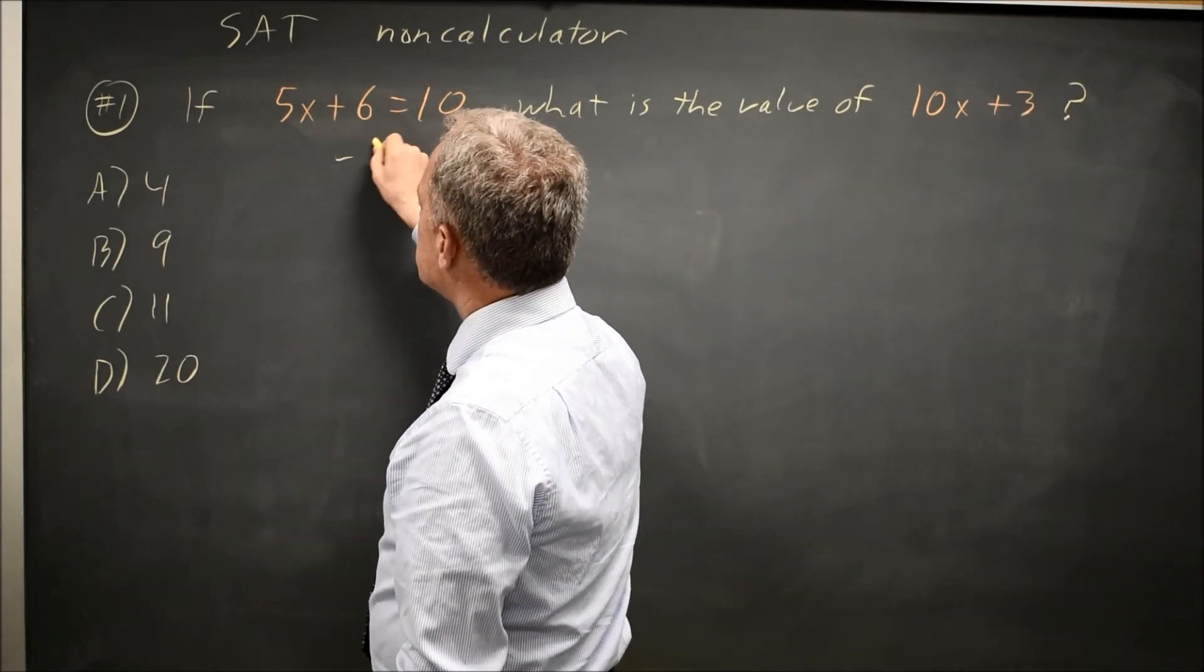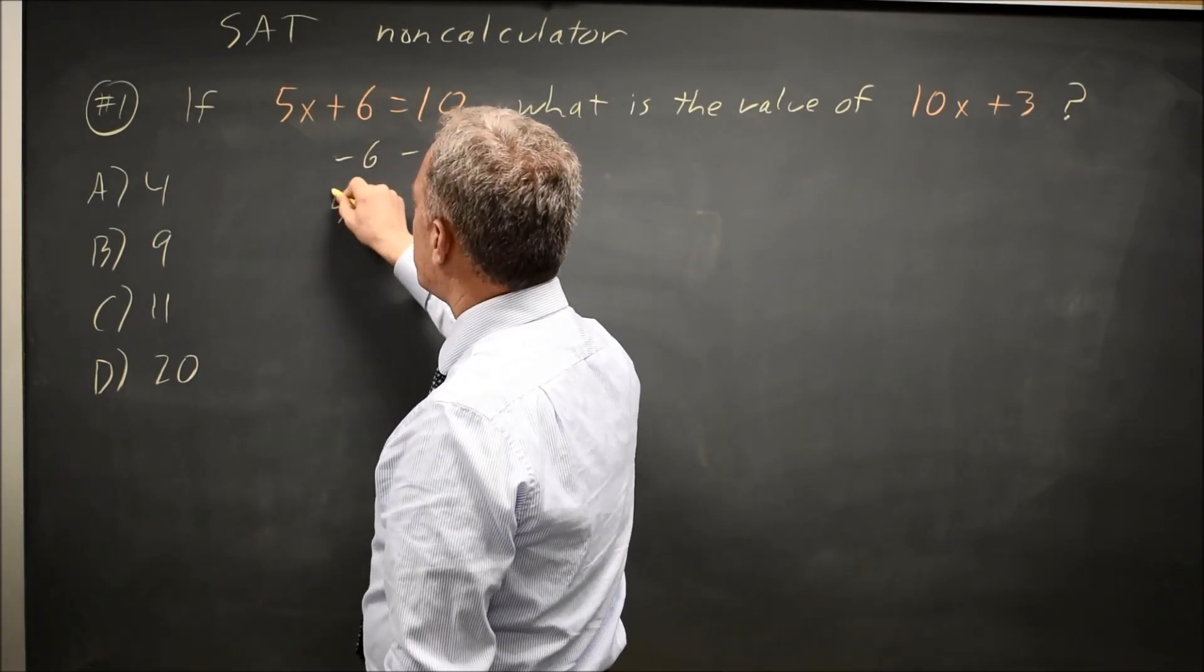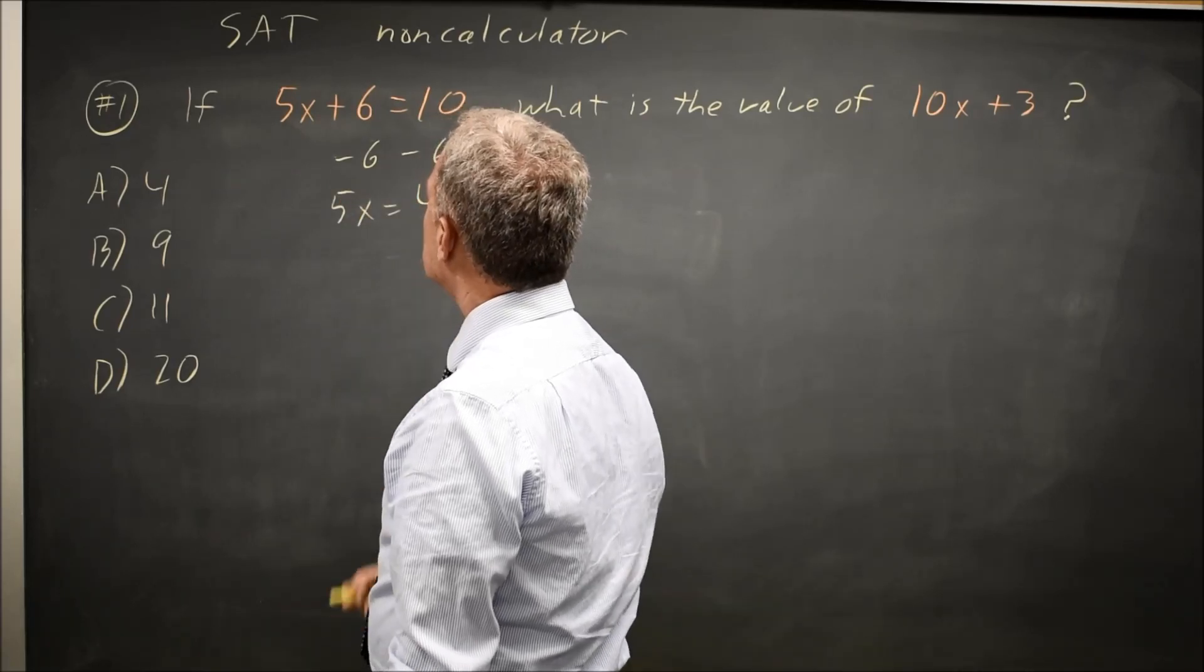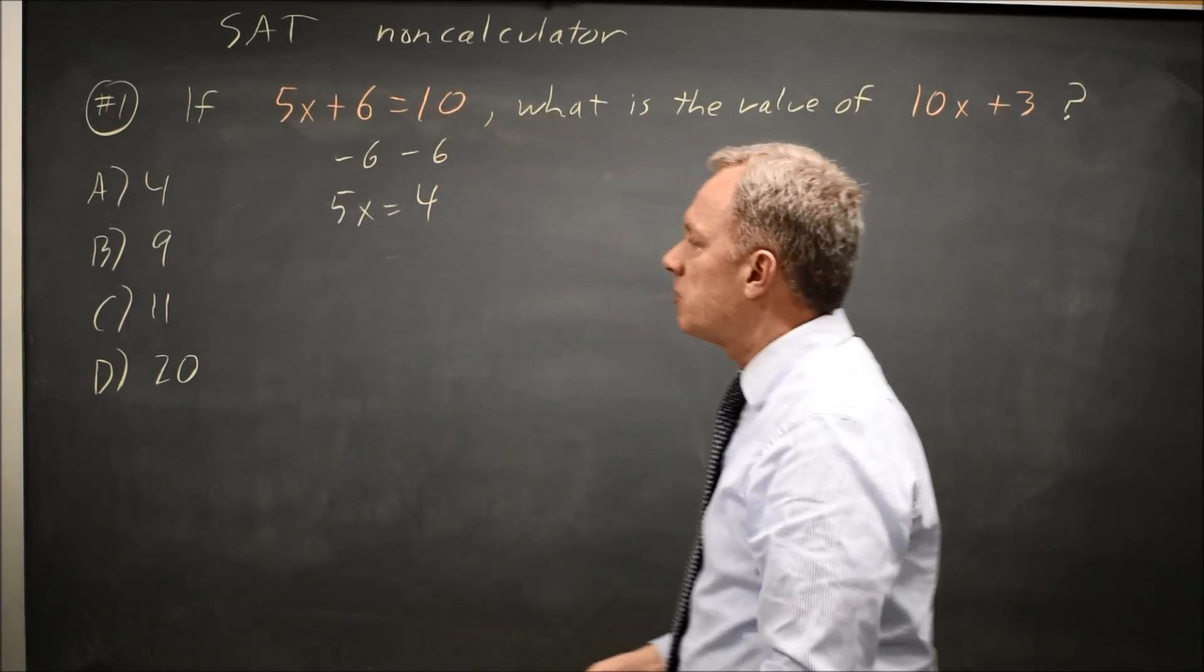I can solve for x by subtracting 6 from both sides to get 5x equals 4, and then I could divide through by 5.